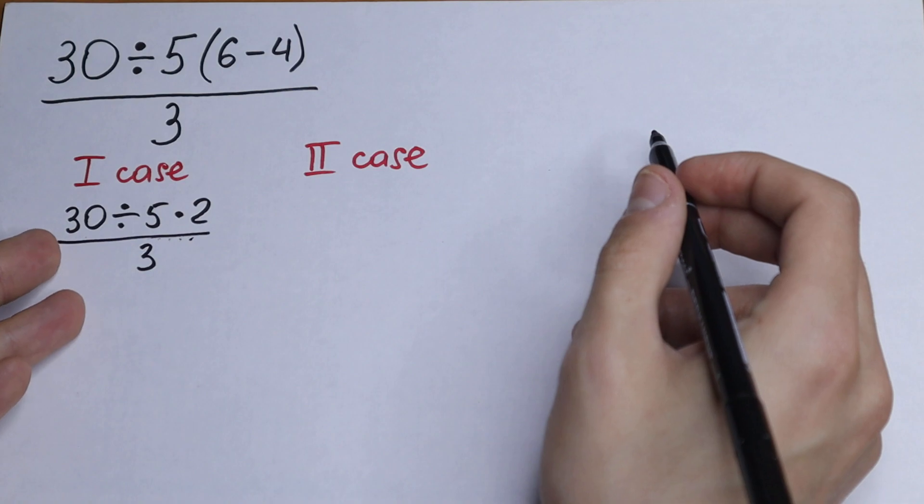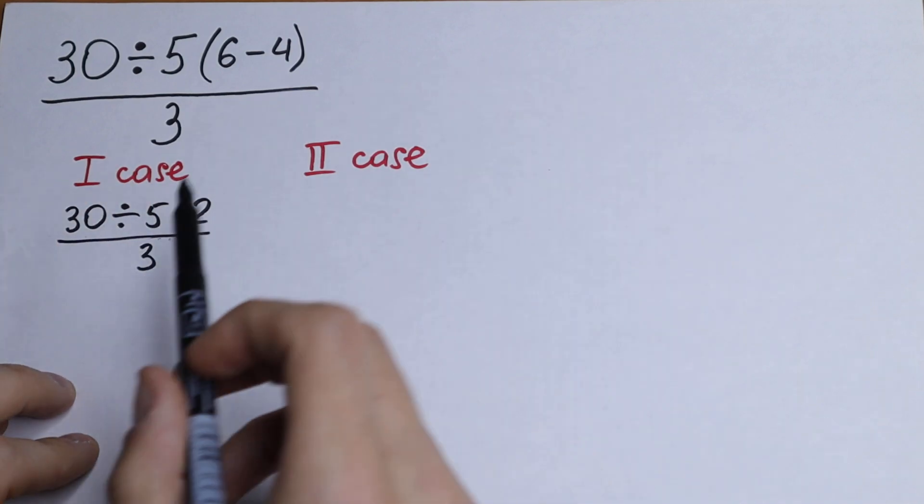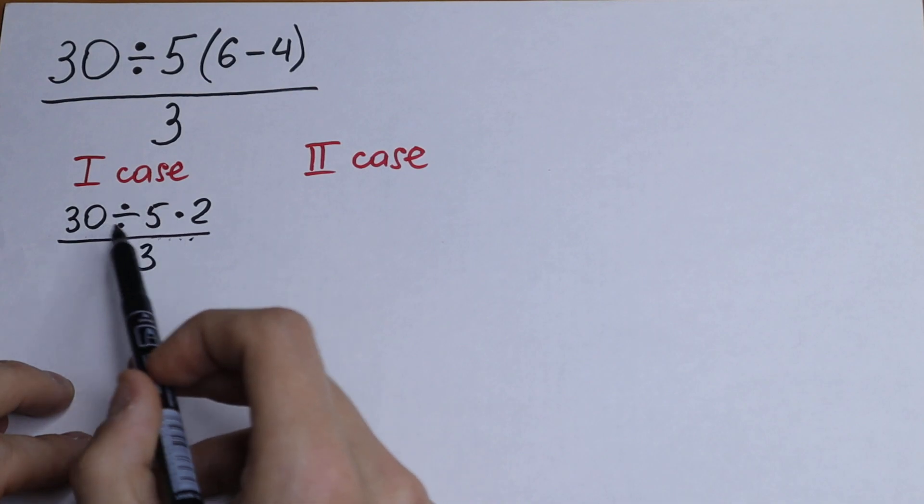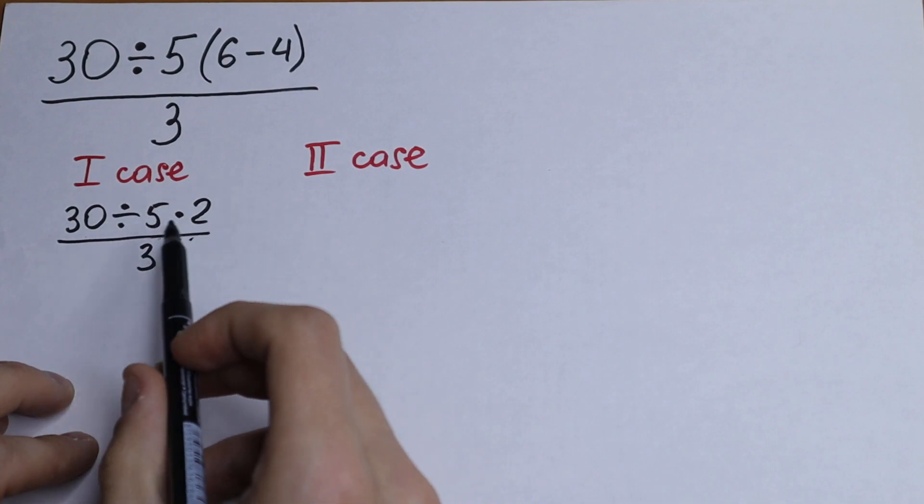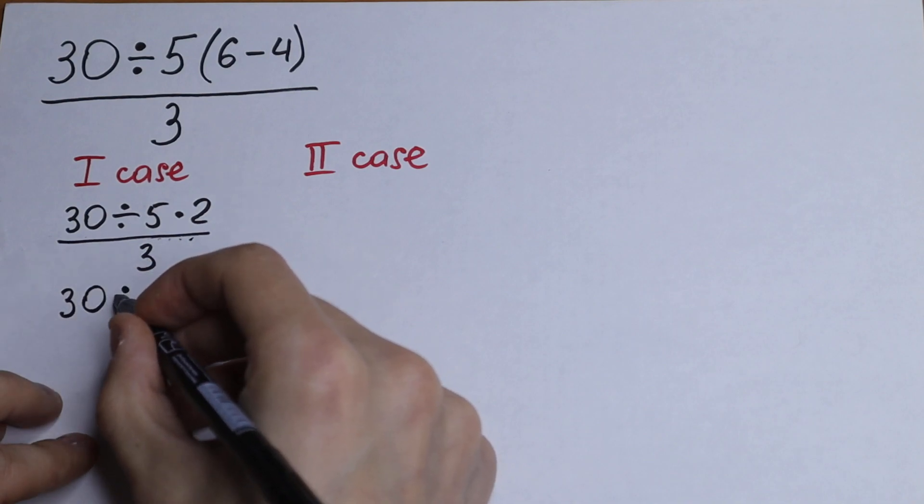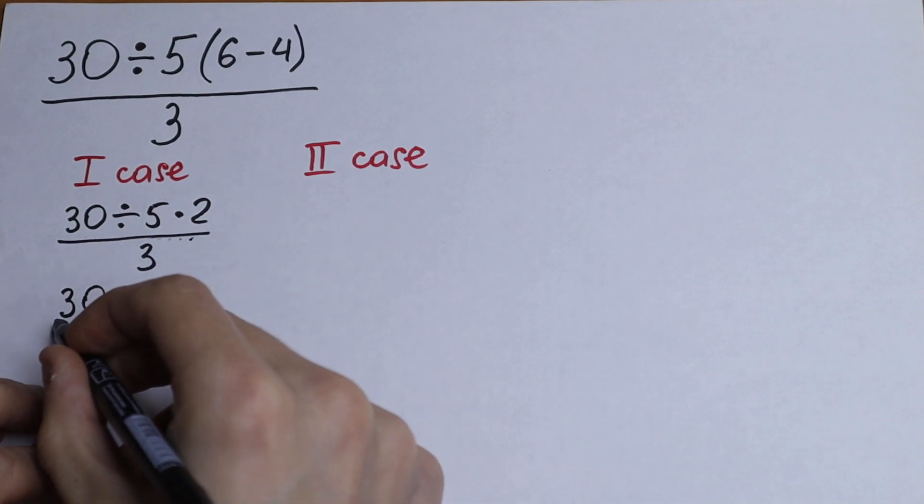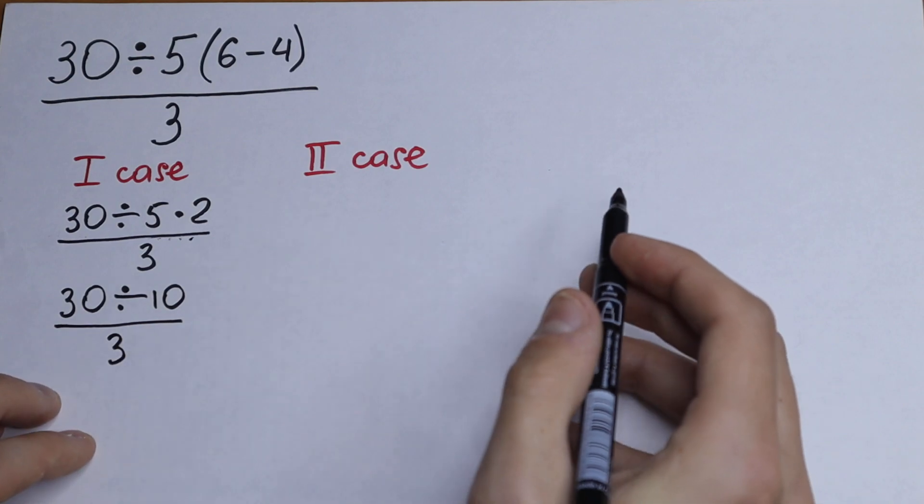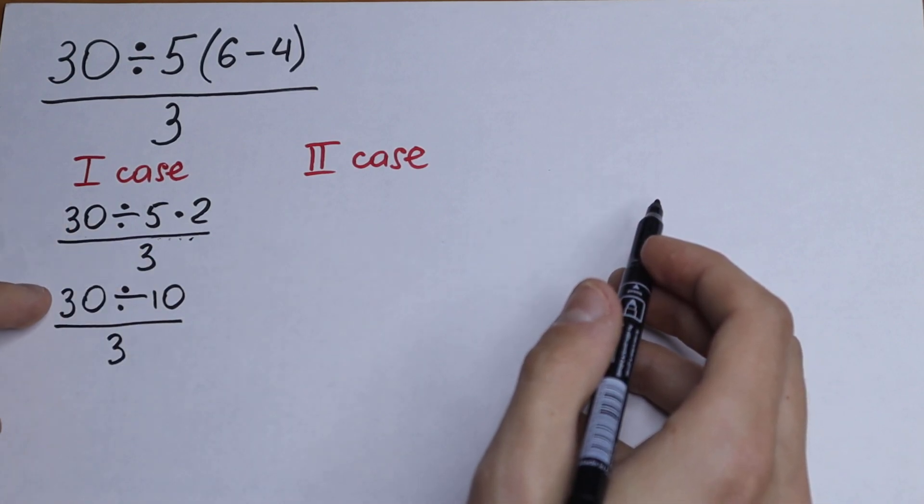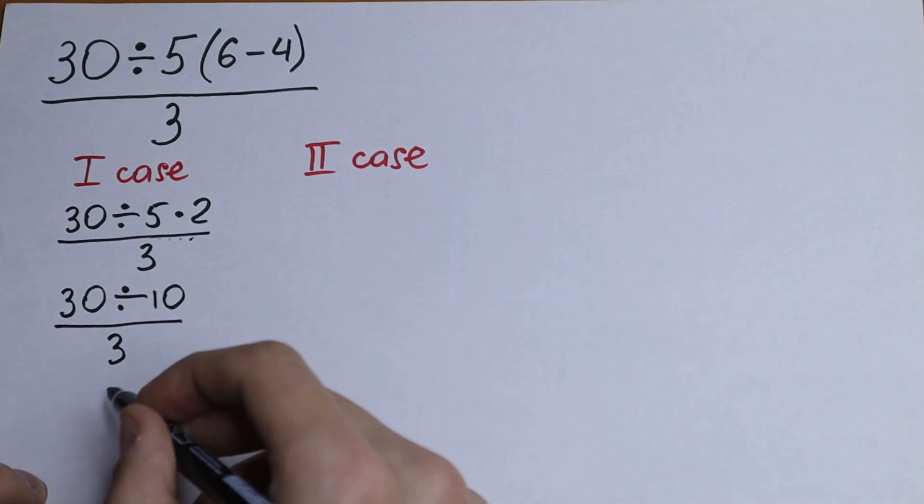How can you do this? 30 divided by 5 times 2, we can multiply 5 by 2 because it's going to have the same order, so 5 times 2 equal to 10, so we will have 30 divided by 10 over 3. Let's go next. 30 divided by 10 will be 3, 3 over 3 will be 1. This is our first case.